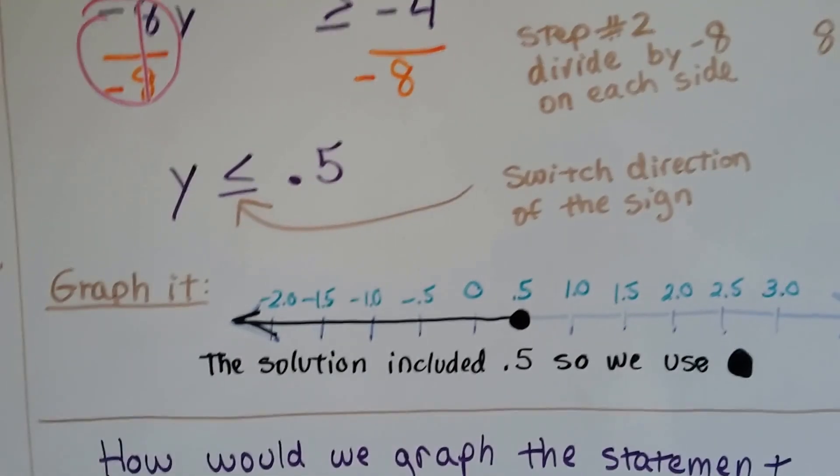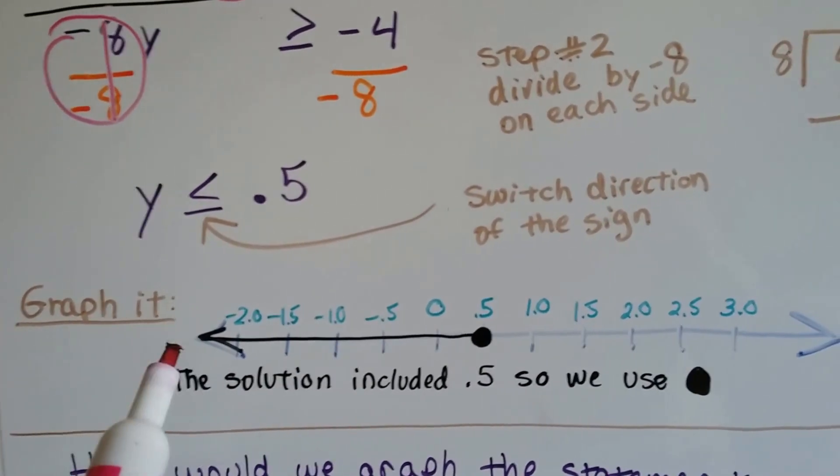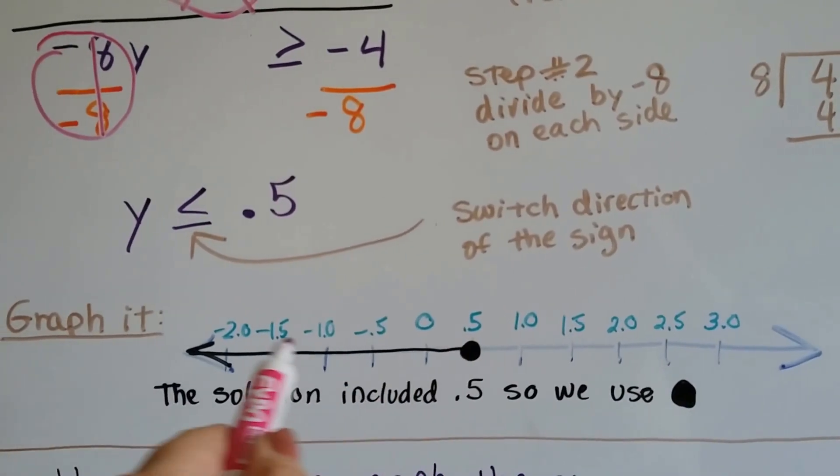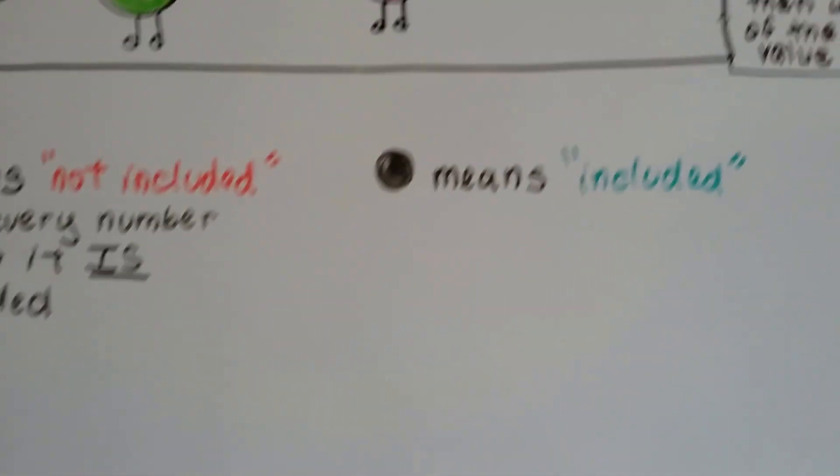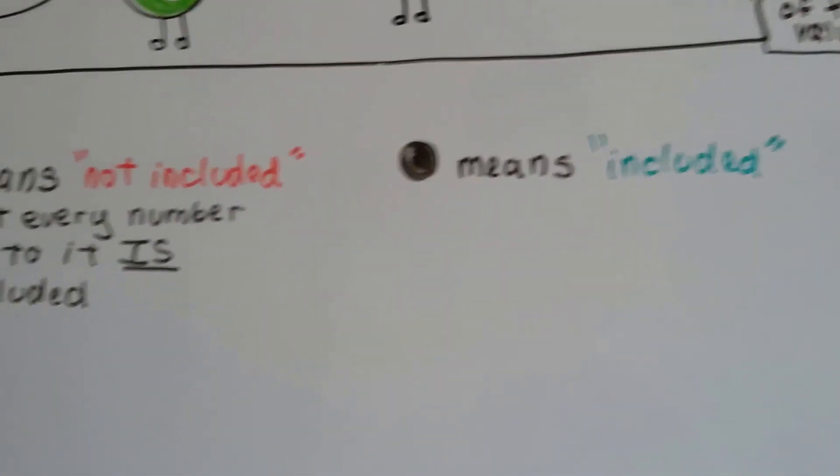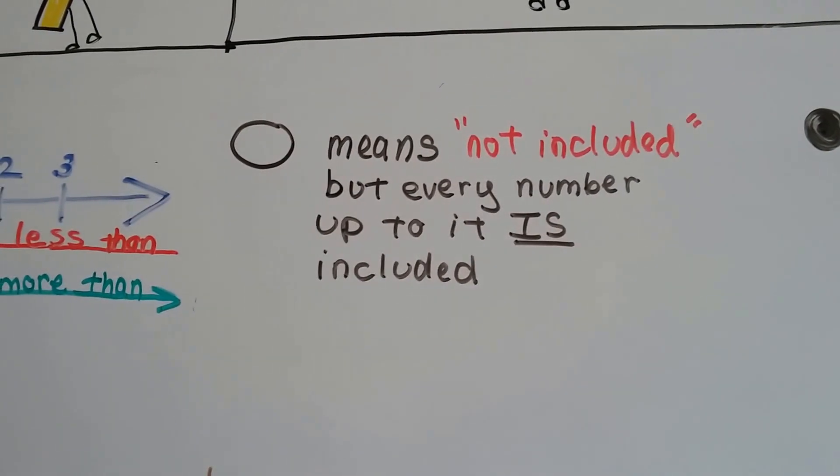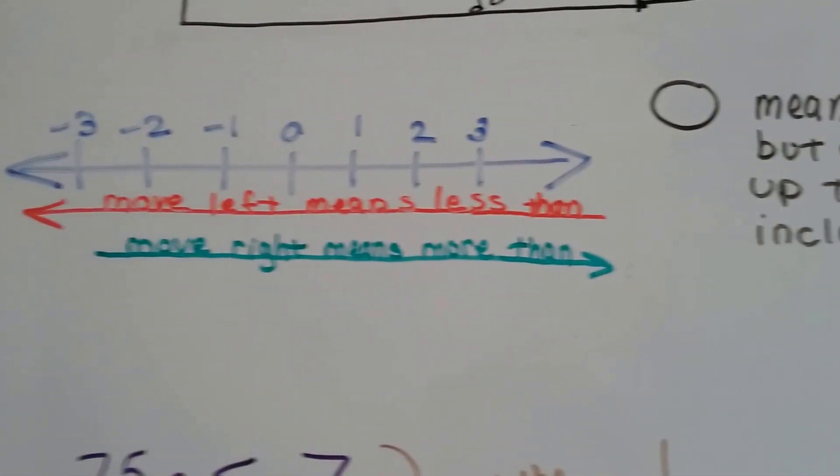Now if we want to graph this, y is less than or equal to 5. So that means it includes 5. So we put in a filled in black dot and drew our line going towards less. So remember, if it's a black dot, it means it's included in the answer. If it's an open circle, it means it's not included, but every number up to it is included, even little 99ths of decimals and fractions.